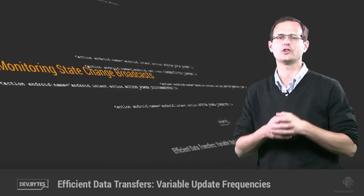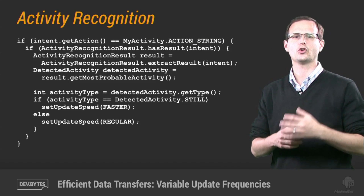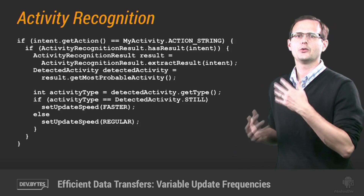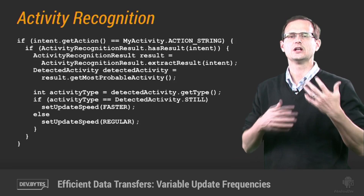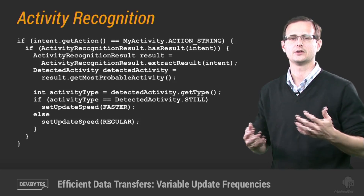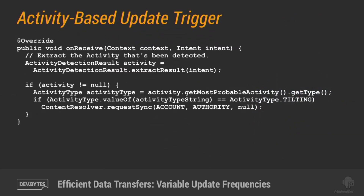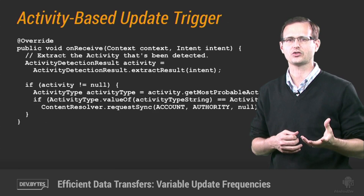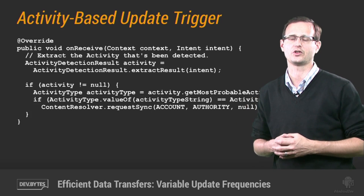You might also want to consider the context of the user themselves. Using the new activity recognition APIs, you can choose to alter the foreground update frequency based on what the user is doing. In this example, we might artificially limit the update rate when they're doing anything other than standing still, on the basis that users are less likely to be looking at the screen and browsing. We can use a similar technique as an alternative to periodic updates — rather than update the app once every 24 hours, you might check for a tilting activity after a prolonged period of being stationary as an indication that the user has been asleep and has now gotten up in the morning, so it's worth refreshing their data.